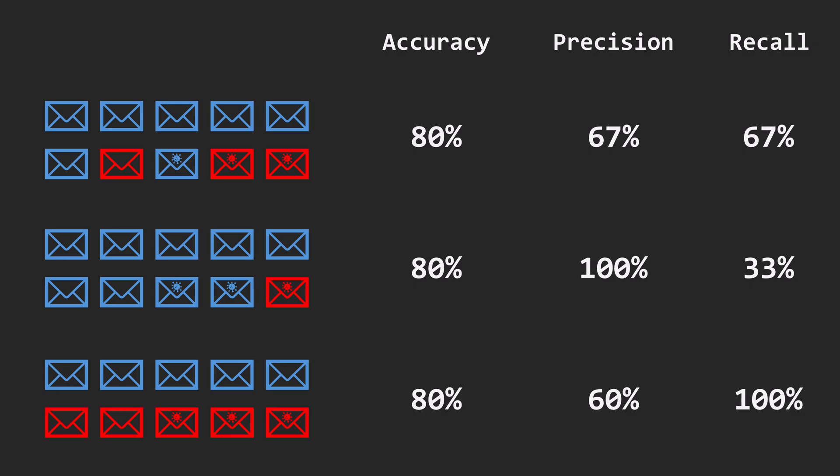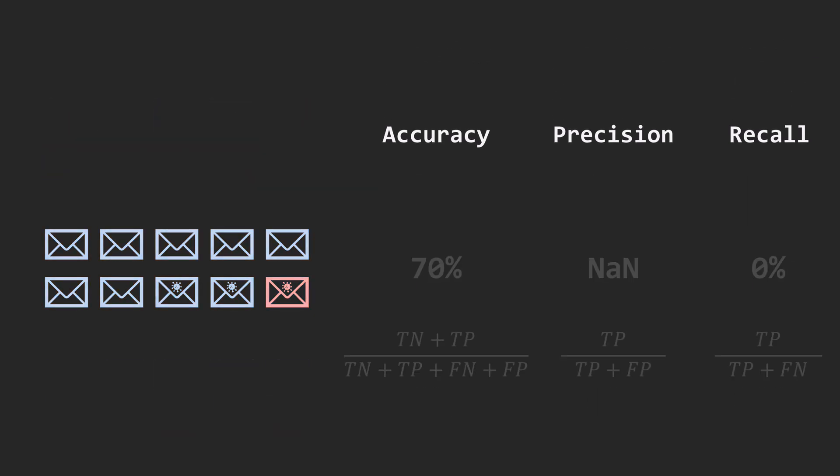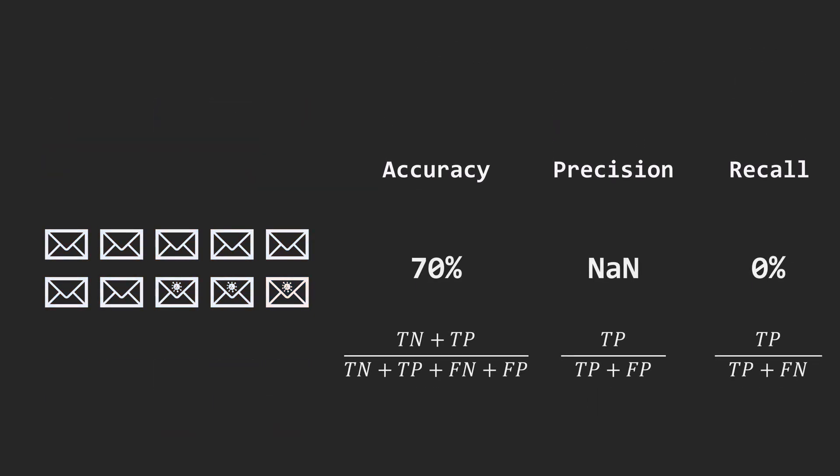Finally, let's quickly practice interpreting these metrics. Suppose a model has 70% accuracy, undefined precision because the denominator is 0, and 0% recall.